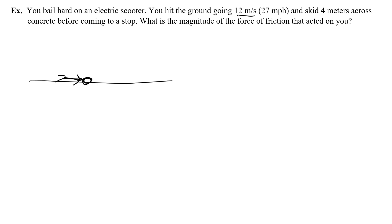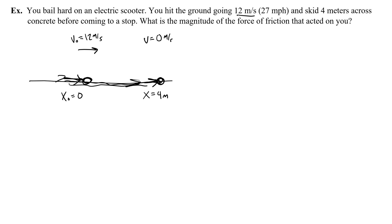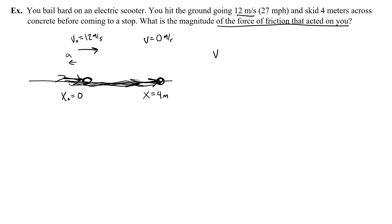You hit the ground with an initial velocity of 12 meters per second, then slow down as you slide across the concrete. Your final velocity when you come to a stop is 0. The skid distance is 4 meters, so x₀ equals 0 and the final position x equals 4. Ultimately I want to find the force of friction. Since I'm sliding to the right, friction acts to the left to decelerate me — there must be an acceleration to the left. I have enough information to find that acceleration, and since I don't have time, I'll use the 'ain't got no time' equation.